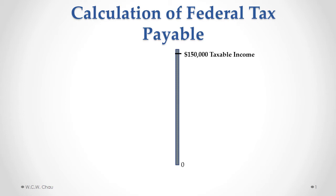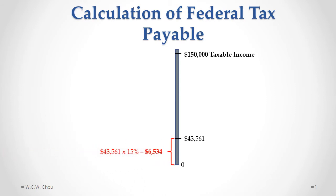Imagine a layer cake with each layer being taxed at a different rate. The bottom layer is the income from $0 to $43,561. That layer of income is taxed at a federal rate of 15%, which gives us $6,534 of tax.